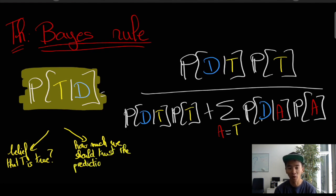In other words, it's more how reliable the theory T, how much we should trust theory T once we've collected data D.